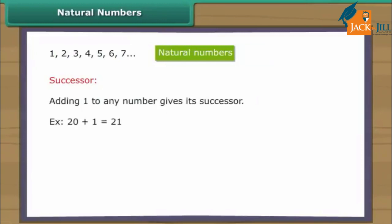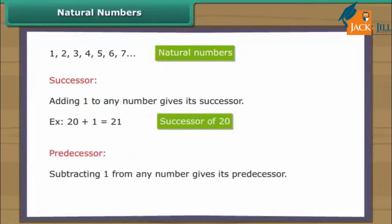Adding one to any number gives its successor. Example: one added to twenty gives twenty-one, which is the successor of twenty. Subtracting one from any number gives its predecessor.